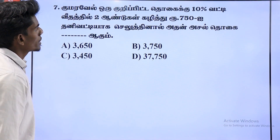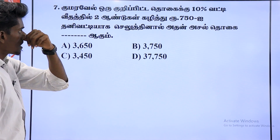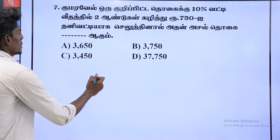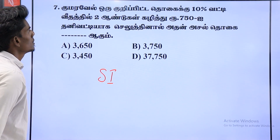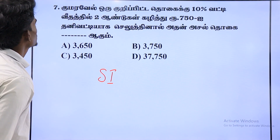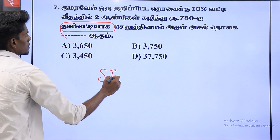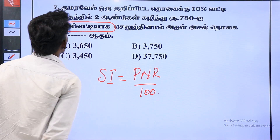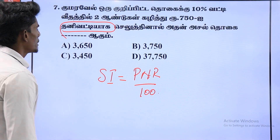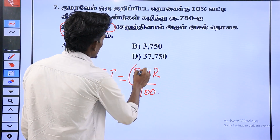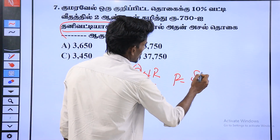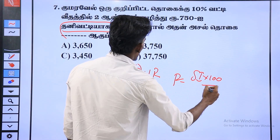He has been wanting a 10% of money, a 6% of money, a 10% of money, a 2% of money. For example, it is a simple interest matter. The simple interest formula is PNR by 100. If you use it, P is equal to NR by 100. SI into 100 divided by NR.